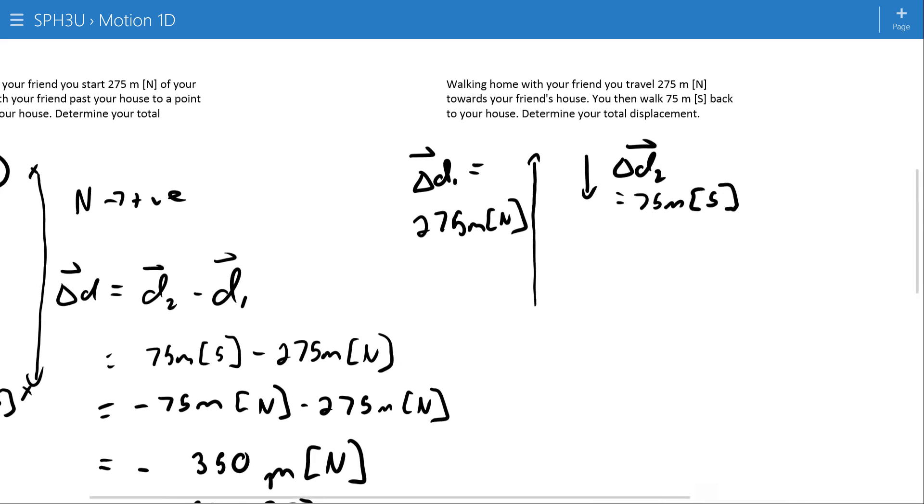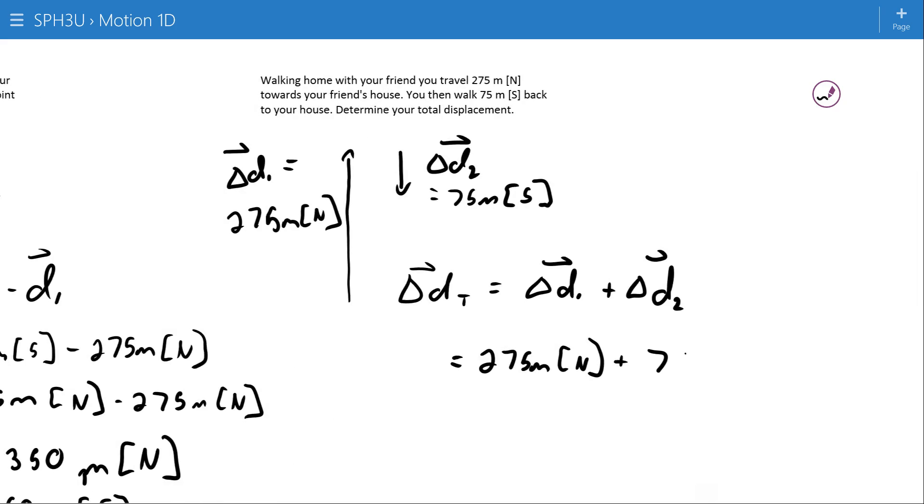And then finally, from a formula, this means that your total displacement is the sum of your individual displacements. So, that's 275 meters north plus 75 meters south.